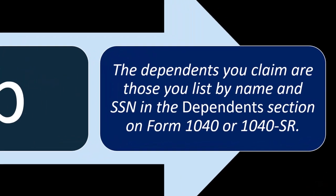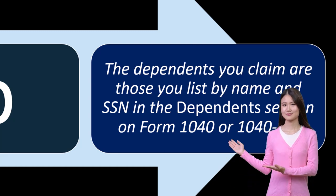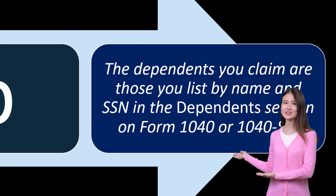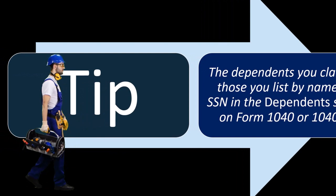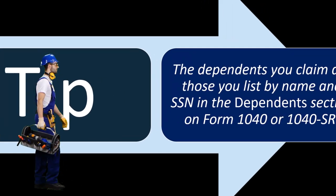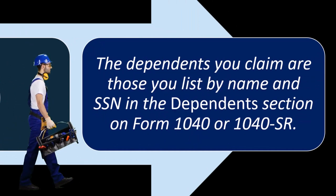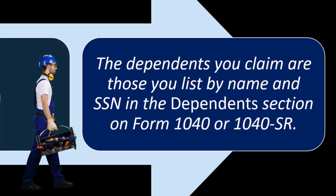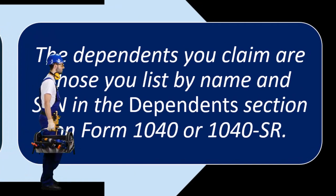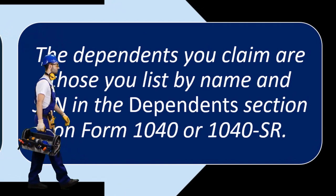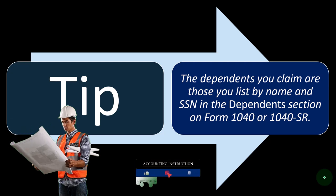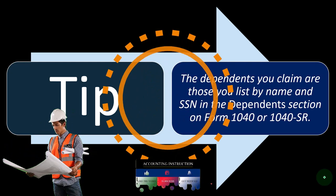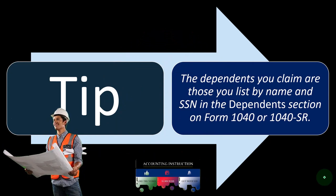The dependents you claim are those you list by name and social security number (SSN) in the dependents section on Form 1040 or 1040-SR. Note that if there are any custody issues, you can't have two people claiming the same dependent — that would be double dipping on the benefits. The IRS can typically pick that up through their computer system using the name and SSN, and having two people claim the same dependent is going to cause problems.